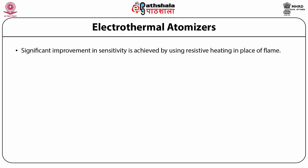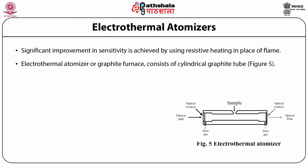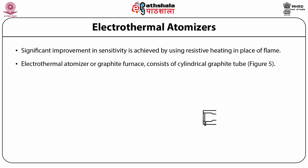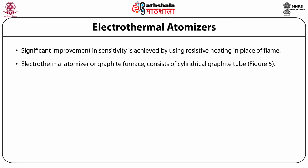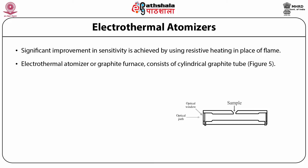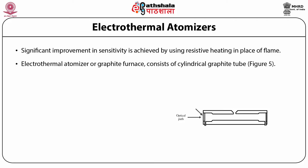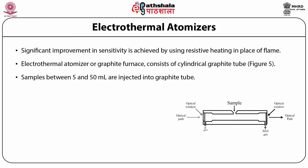Another type of atomizer is the electrothermal atomizer. A significant improvement in sensitivity is achieved by using resistive heating in place of a flame. A typical electrothermal atomizer, also known as a graphite furnace, consists of a cylindrical graphite tube approximately 1 to 3 cm in length and 3 to 8 mm in diameter. The graphite tube is housed in an assembly that seals the ends with optically transparent windows and allows for the passage of a continuous stream of inert gas, protecting the graphite tube from oxidation and removing gaseous products. A power supply passes a current through the graphite tube resulting in resistive heating. Samples of 5 to 50 µL are injected through a small hole at the top of the tube.